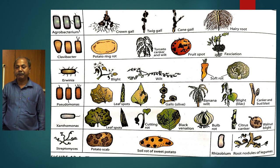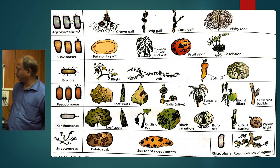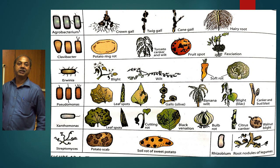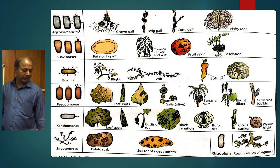Black rot of cabbage is caused by Xanthomonas, and in that disease the vein becomes black — you can see the vein becomes black in the case of black rot of cabbage. Another genus is Rhizobium, which is not pathogenic; it is a symbiotic bacteria which inhabits the roots of leguminous plants, making nodules, and is helpful in fixing nitrogen.